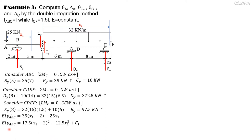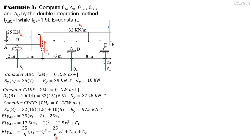Integrating again: EI y_ABC equals (35/6)(x1 minus 2)³ minus (25/6)x1³ plus C1·x plus C2. Note that C2 is the deflection at A, delta_A. Now for portion CDEF, E times I is 1.5I.